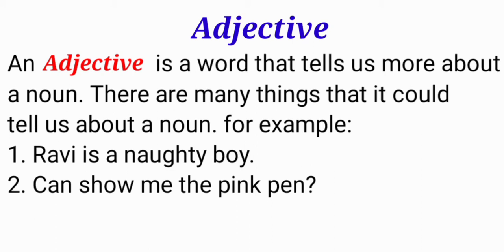We will see the examples. First, we will see the first example: 'Rabi is a naughty boy.' In this sentence, the word 'naughty' is an adjective. It is telling more about a noun. The noun here is Rabi, so it is telling about a noun.